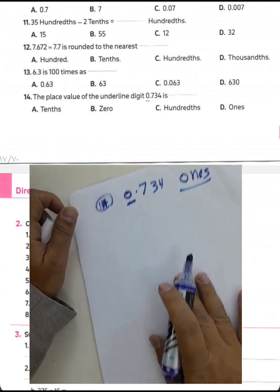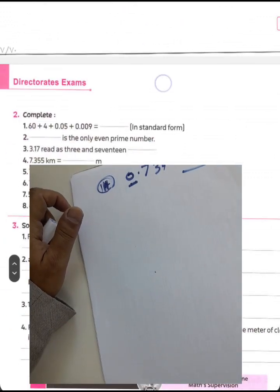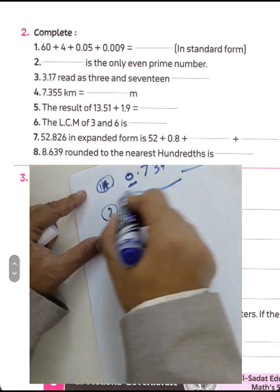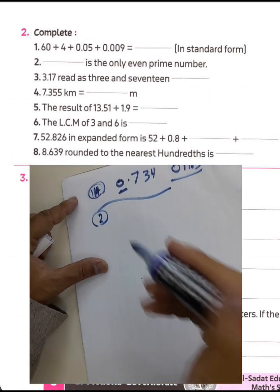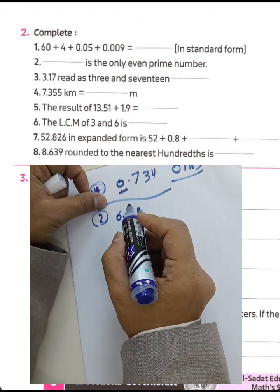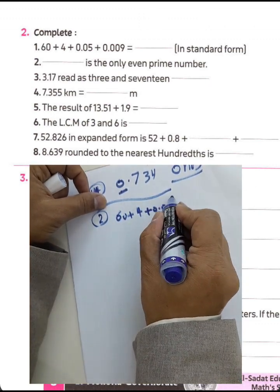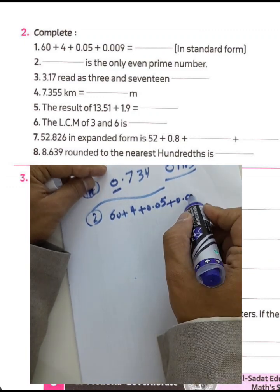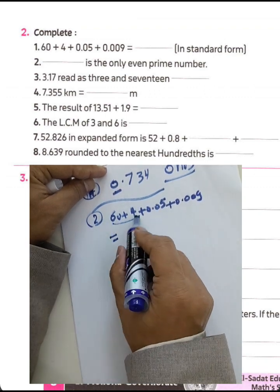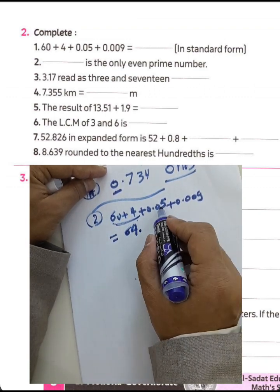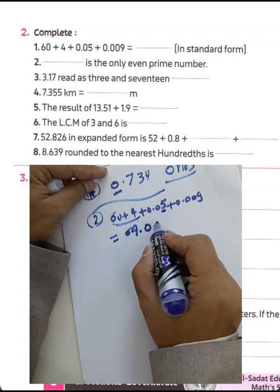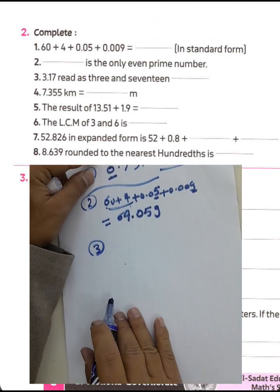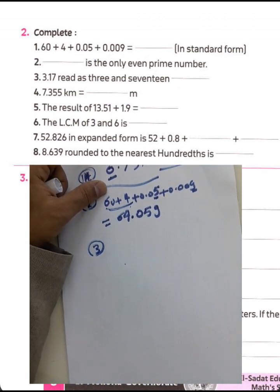Question 2 (complete): 60 plus 4 plus 0.05 plus 0.009. We can add these: 64 in the whole number, zero in the tenths, five in the hundredths, and nine in the thousandths. The only even prime number is 2.